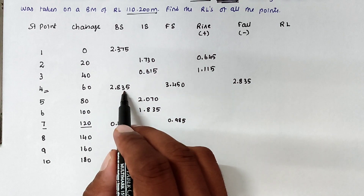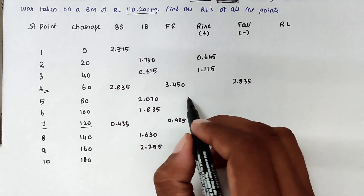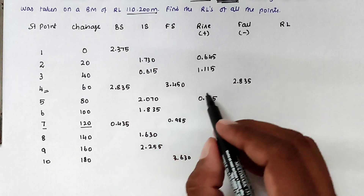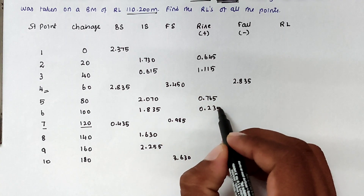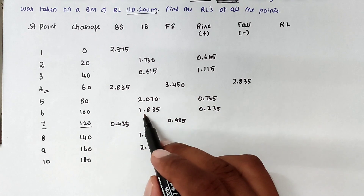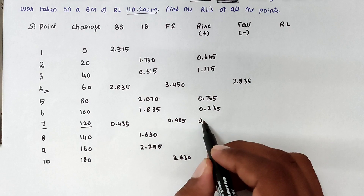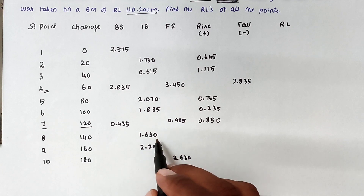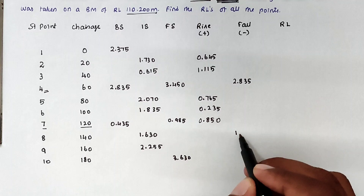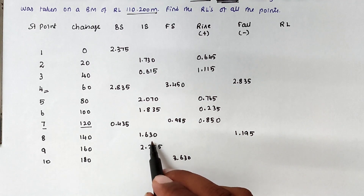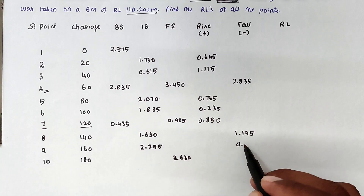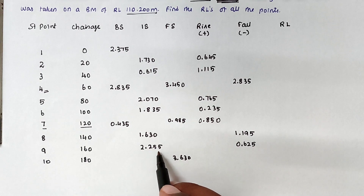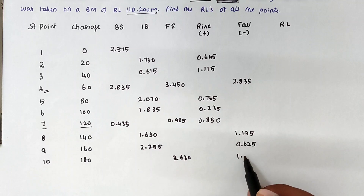Next, 2.835 minus 2.070 gives a positive value of 0.765, written as rise. Then 2.070 minus 1.835 gives 0.235, also in the rise column. Next, 1.835 minus 0.985 gives 0.850; and 0.435 minus 1.630 gives a negative value of 1.195, written as fall. Then 1.630 minus 2.255 gives a negative value of 0.625, written as fall. Finally, 2.255 minus 3.630 gives a negative value of 1.375, also fall.